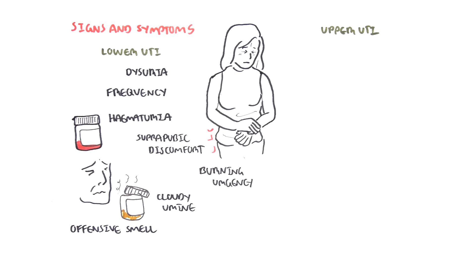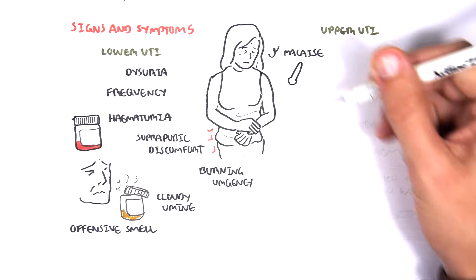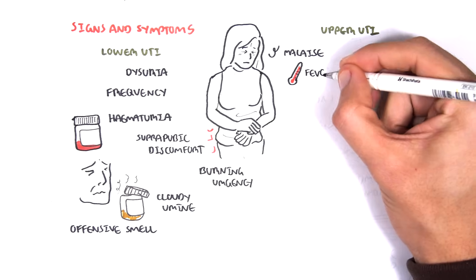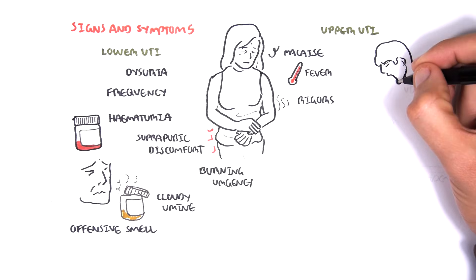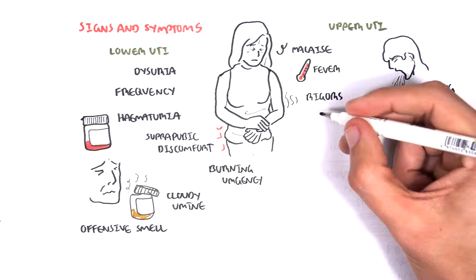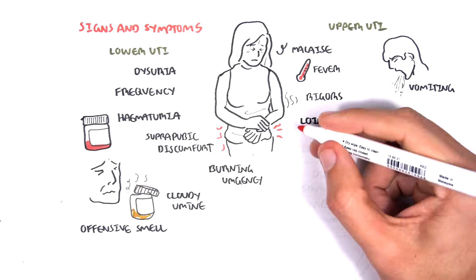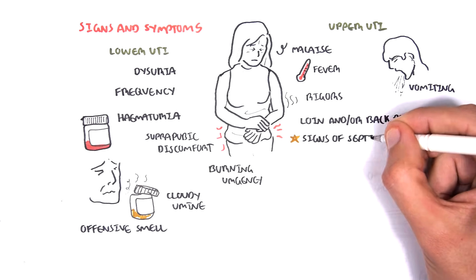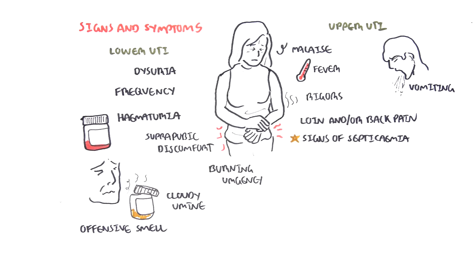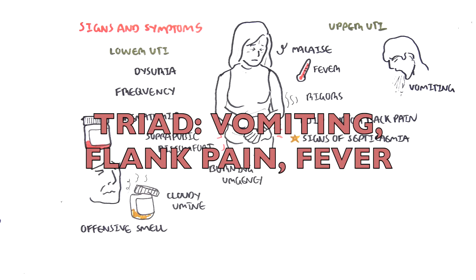Upper urinary tract infections can have the same symptoms, but classically present with malaise, fever, rigors, vomiting, and loin/flank pain radiating to the back. There can be signs of shock if the infection is more severe. The classic triad for upper urinary tract infections, or pyelonephritis, is vomiting, flank/loin pain, and fever.